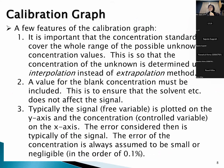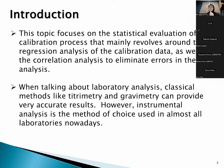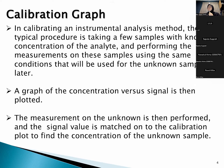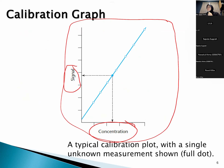What is a calibration graph? Most of the time in analytical chemistry we have to plot this, or sometimes it is auto-generated from machines — for example, if you are using chromatography. The typical procedure in calibrating an instrumental analysis method is taking a few samples with known concentration of the analyte and performing measurements under the same conditions that will be used for the unknown sample.